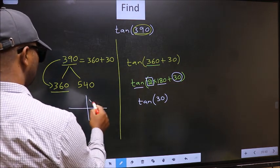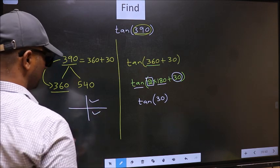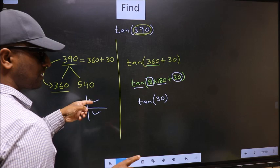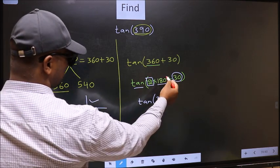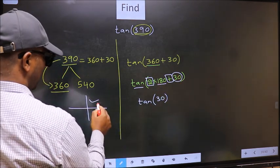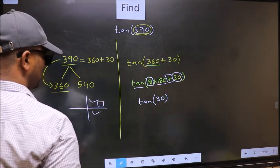So now to select the quadrant we should look at this symbol. Here we have plus, here we have plus. That means the angle lies in the first quadrant and in the first quadrant tan is positive.